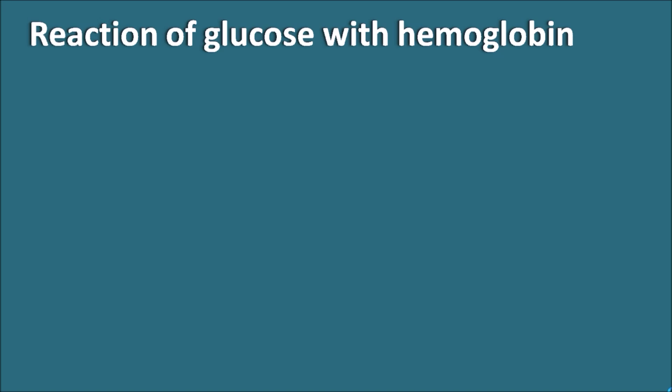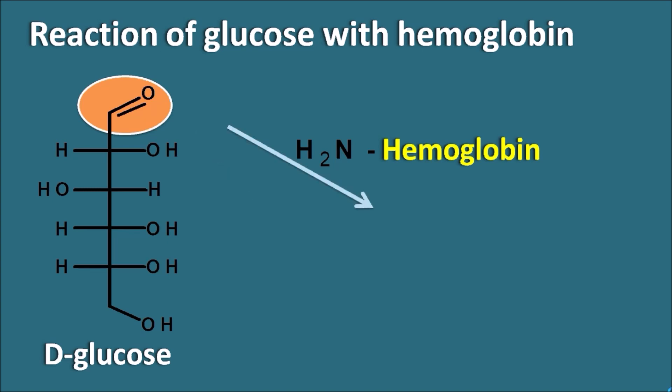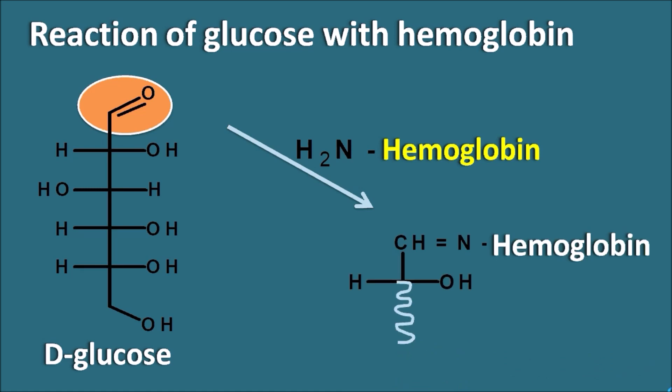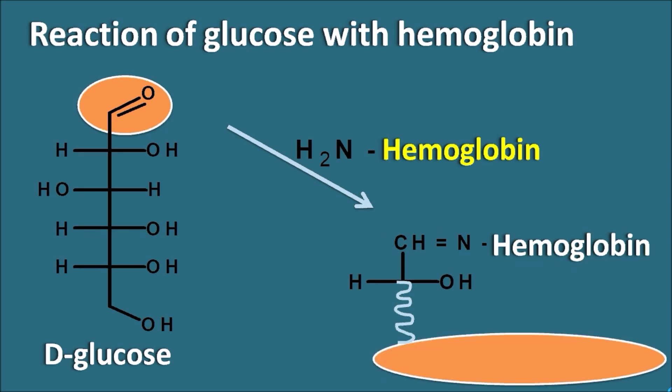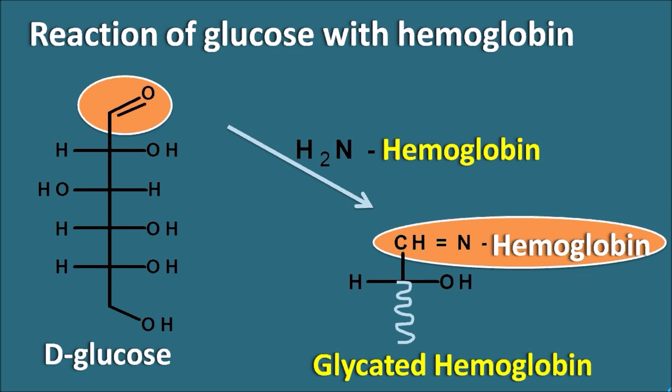Now let us see the reaction of glucose with hemoglobin. D-glucose can react with hemoglobin, and we have already seen that hemoglobin type A1c is having the N-terminal as valine, and valine is having the NH2 group at the alpha position. Now this aldehyde can react with the amine group on the hemoglobin and again it can form a Schiff's base with the hemoglobin. Because of this condensation reaction, it forms glycated hemoglobin.